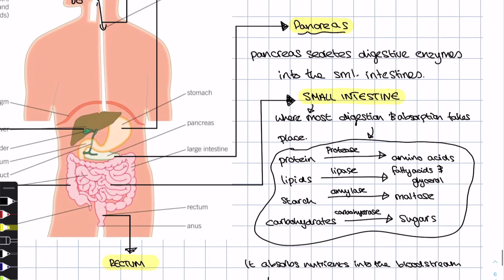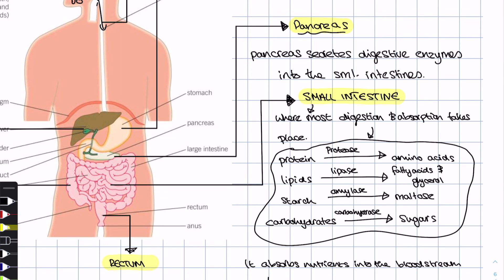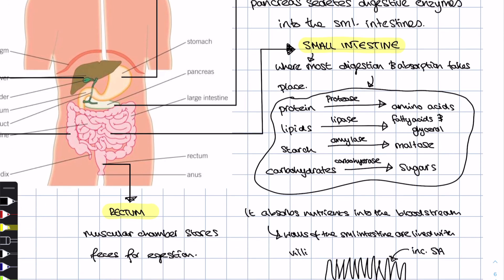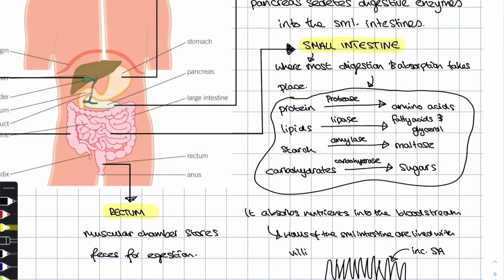Now food's finished in the stomach, it's going to arrive in the small intestine. This is where most digestion and absorption takes place. Protein is broken down into amino acids using protease, lipase with lipids into fatty acids and glycerol, amylase, any leftover starch into maltose, etc. And also here is where all of those nutrients are going to be absorbed using those villi that we talked about.